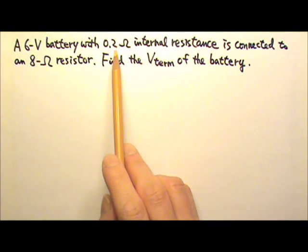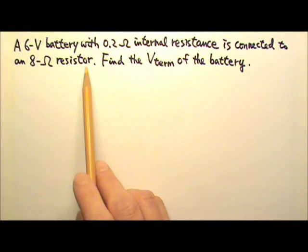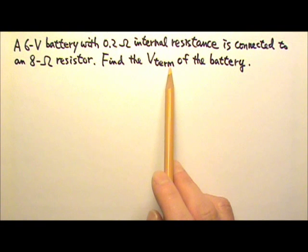A 6V battery with 0.2 ohm internal resistance is connected to an 8 ohm resistor. Find the terminal voltage of the battery.